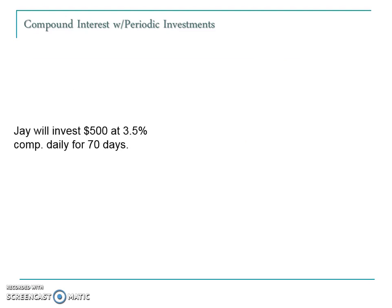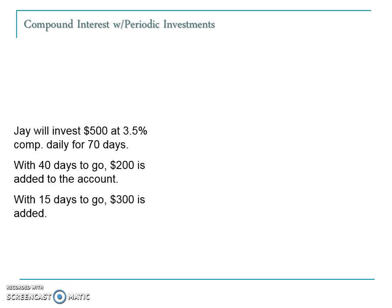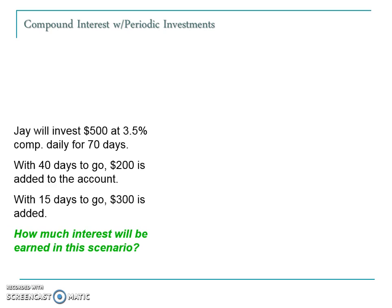Here we have the start of the first example. Jay will invest $500 at 3.5% compounded daily for 70 days. With 40 days to go, $200 is added to the account, and with only 15 days to go, $300 is added. This is more like a regular individual's transactions in a savings account. The question is asking how much interest will be earned in this scenario. This is essentially treated as three separate deposits and the interest that each accrues in the time period that it's in there.